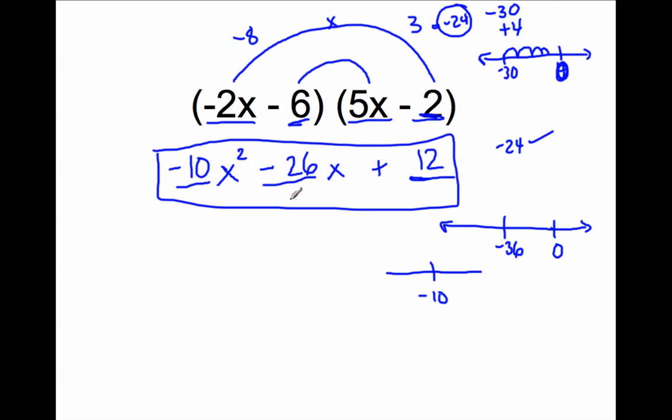These both check out. So this is correct. Negative 10x squared minus 26x plus 12. These are your coefficients and this is your constant. Hope you enjoyed and can understand how to multiply binomials.